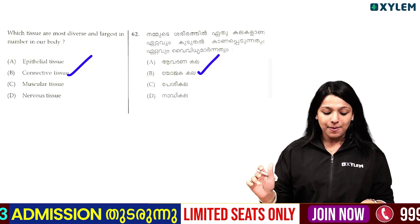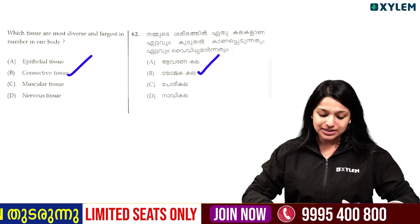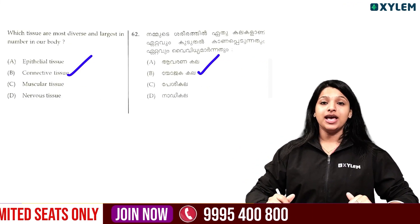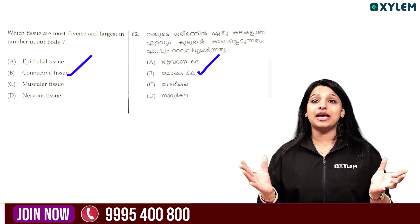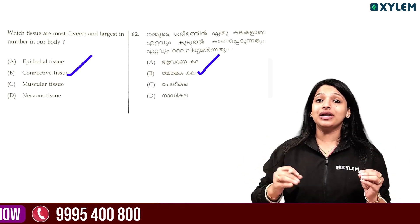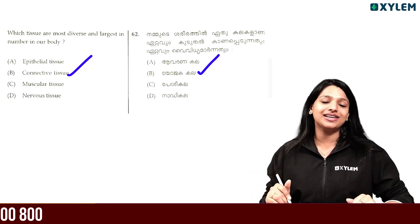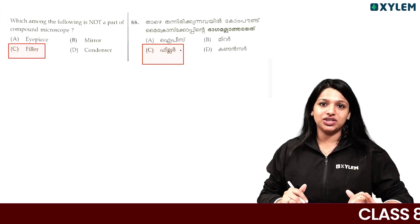Ok. Which tissue is the most diverse and largest in our body? In our body, there is a lot of evidence. That is why it is a connective tissue.